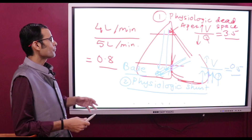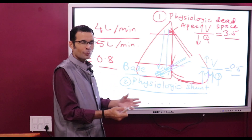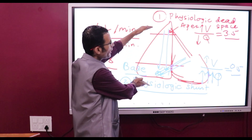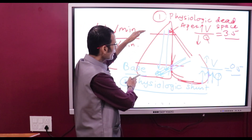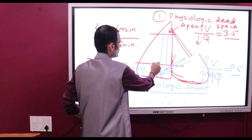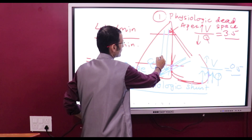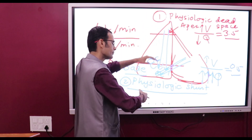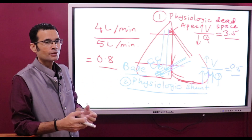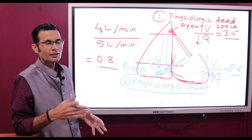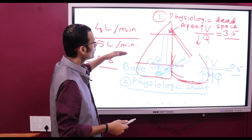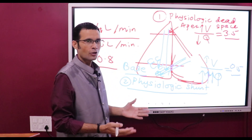On Earth, due to gravity, there is a weight of the lungs, and because of this the alveoli near the base are compressed by the weight of the lungs. In weightlessness or zero gravity in the spacecraft, this compression will not happen and the alveoli near the base will not be compressed.